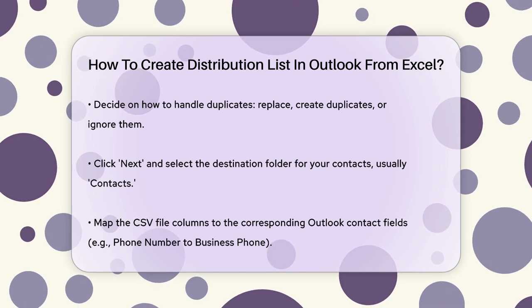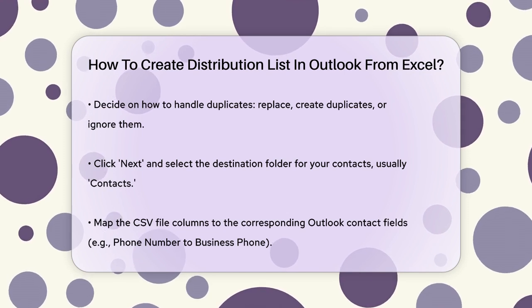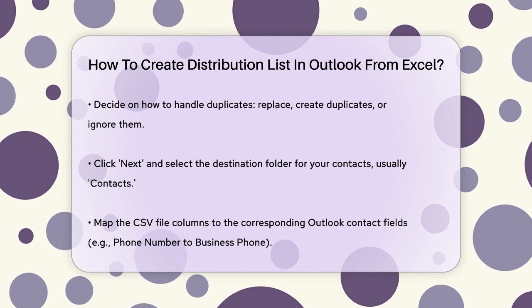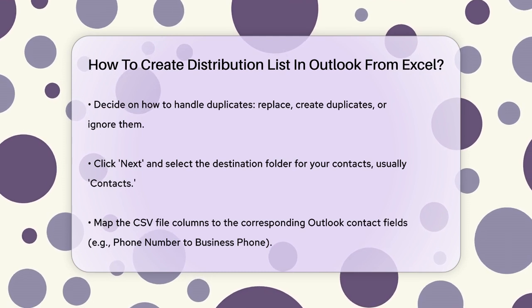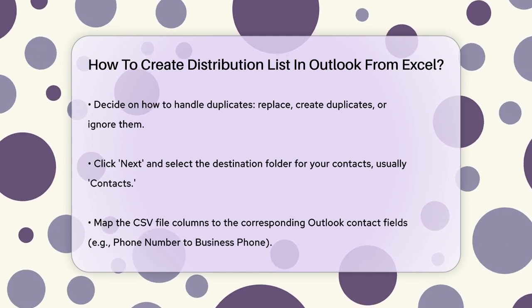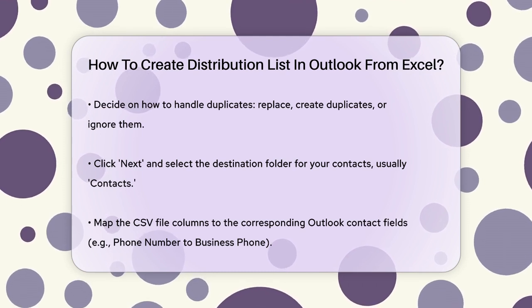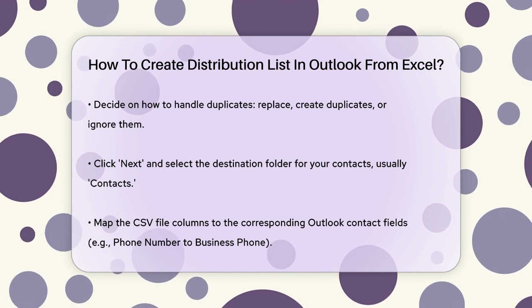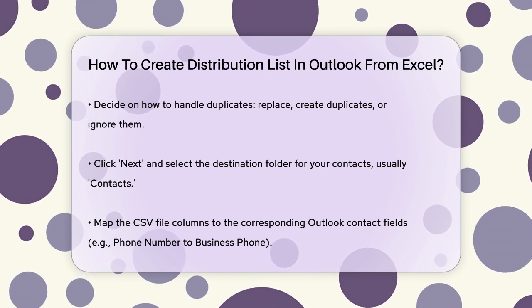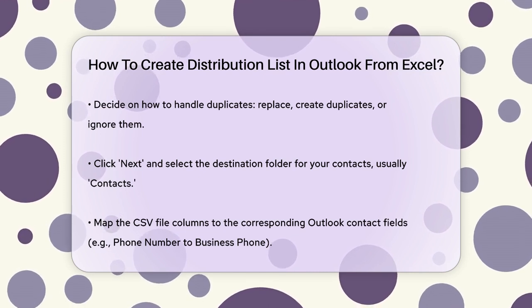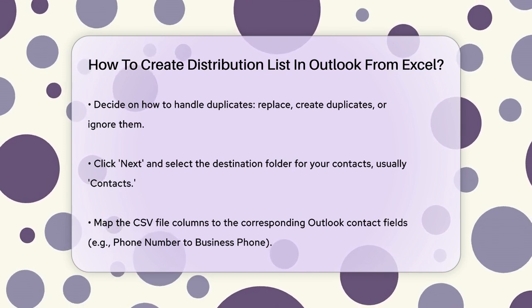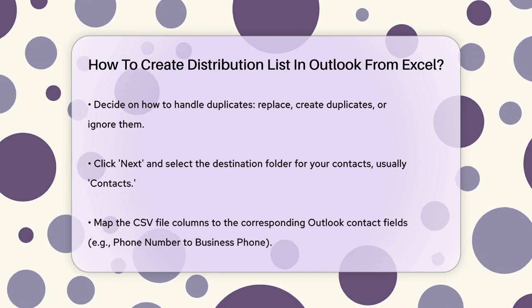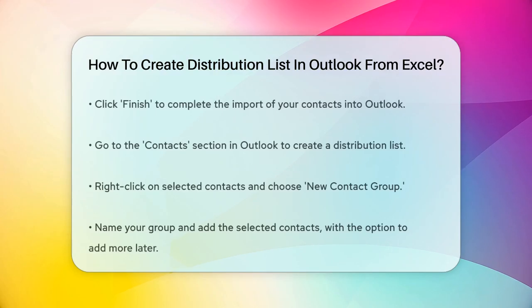The next step is crucial. You need to map your CSV file columns to the corresponding Outlook contact fields. For example, if your CSV file has a column for phone number, you need to match it with the business phone or home phone field in Outlook. Once you've mapped all the fields correctly, click Finish.